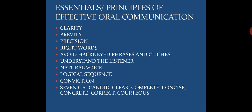The tenth point is the 7 Cs: candid, clear, complete, concise, concrete, correct, and courteous — which you have studied in the first chapter. So, the principles of effective oral communication include 10 points: clarity, brevity, precision, right words, avoid hackneyed phrases and clichés, understand the listener, natural voice, logical sequence, conviction, and 7 Cs.